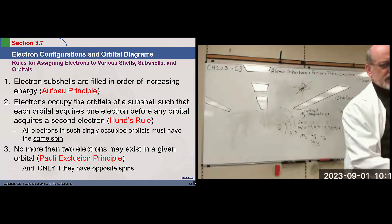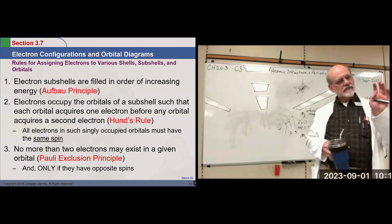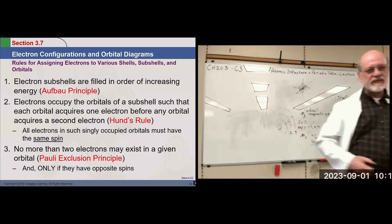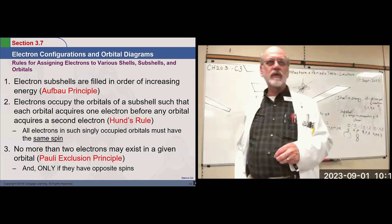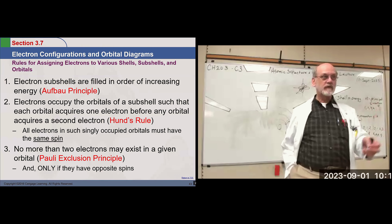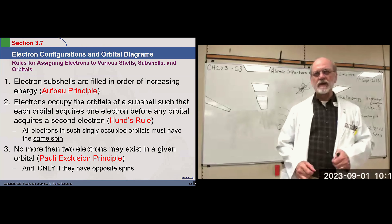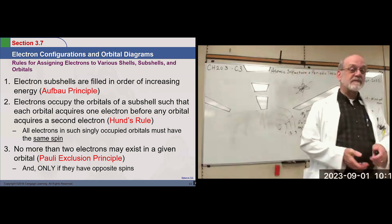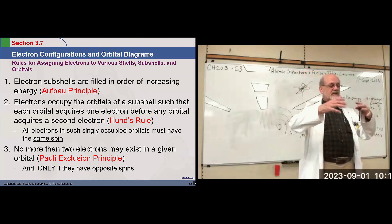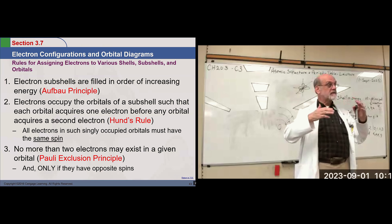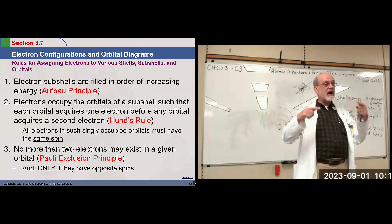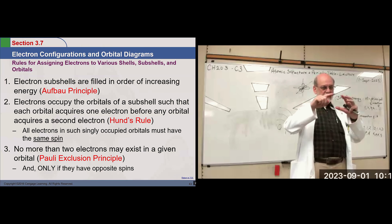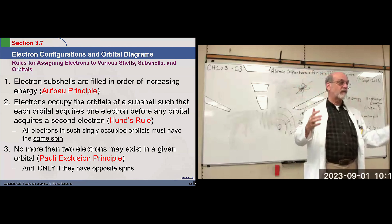These are some principles that govern how we build atoms. The Aufbau principle — Aufbau is a German word — means that as you build the atom, adding one more proton, the next electron in the neutral atom goes into the lowest possible energy level that's available. You've got them filling in here, then the next one out here, and you just keep building that way.